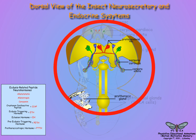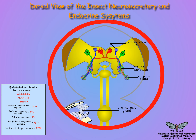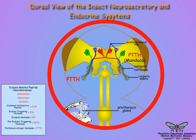Molting starts with the release of the prothoracicotropic hormone, which is a product of protocerebral neurosecretory cells. The prothoracicotropic hormone is released from the corpora cardiaca in many species, but from the corpora allata in Manduca.